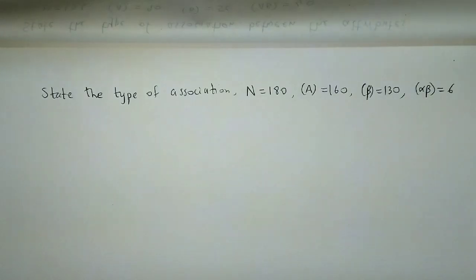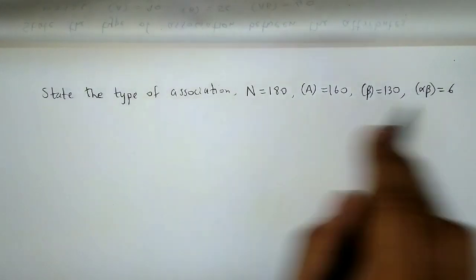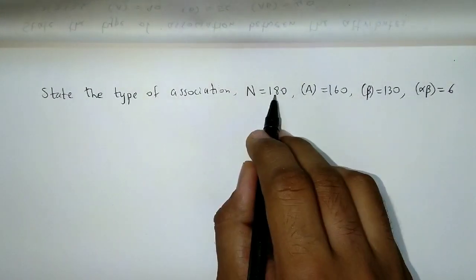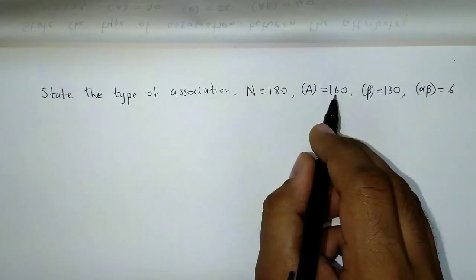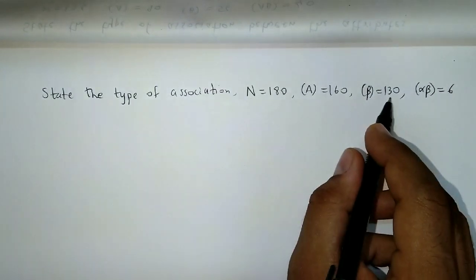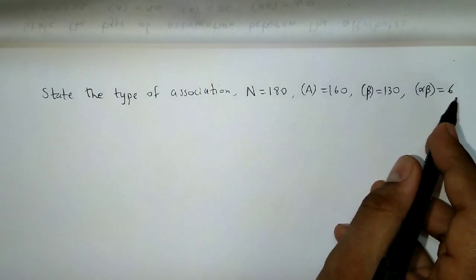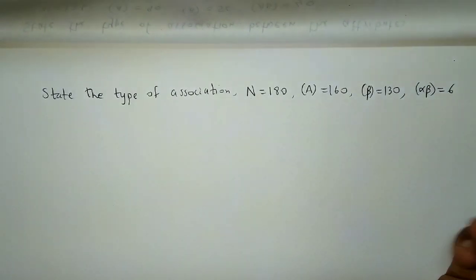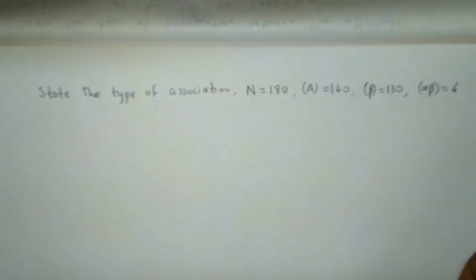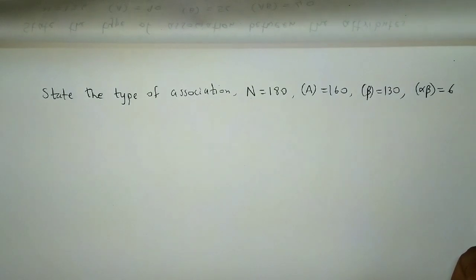Okay, now let's take one more example and state the type of association for the following data. N is 180, frequency of A is 160, beta frequency is 130, and alpha beta frequency is 6. Now, we cannot directly use the comparison method because we need AB, alpha B, and N, right? These are four values.